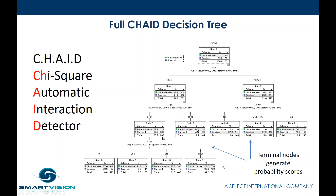Everybody on board ends up in one of the terminal nodes — nodes 8, 9, 10, 11, 4, 5, 6, or 7 — giving eight probability values. That's how a decision tree works: automatically selecting variables, building hierarchically, and stopping when it can no longer find significant relationships or runs out of variables. It might also stop when group sizes become too small, hitting a minimum threshold.